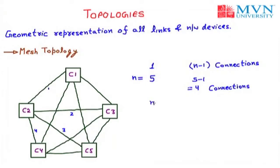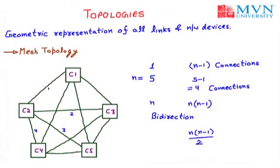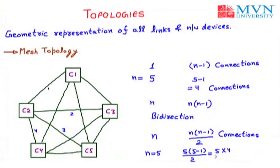So if we have N number of computers, then the maximum possible connections is N into N minus 1. And if all wires are bidirectional, the connections would be N into N minus 1 by 2. Here N is 5, so the maximum possible connections is 5 into 5 minus 1 by 2, which equals 5 into 4 by 2, that is 10 connections.